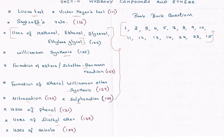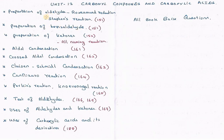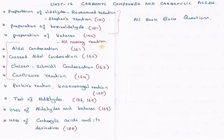Next is the 12th lesson. In the 12th lesson, preparation of aldehydes, benzaldehyde, ketones — the first two to four or five topics you will cover everything. We will cover the Rosenmund's reaction, Clemmensen's reaction, and naming reactions. The important questions include: Aldol condensation, crossed Aldol condensation, glycol condensation, and condensation reactions — these four questions are very important.